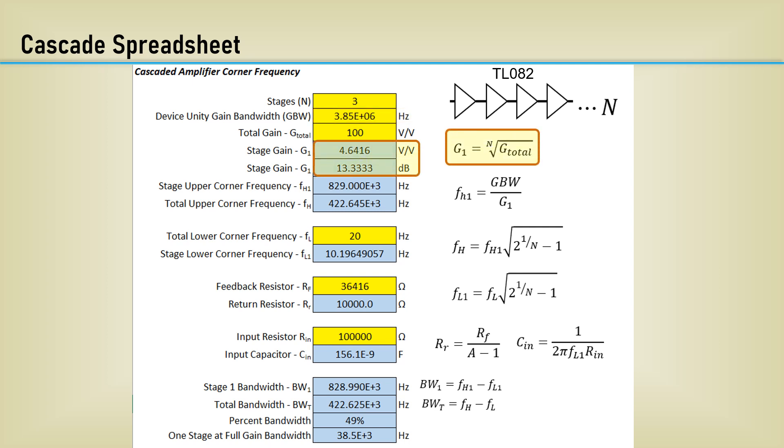This calculates the individual stage gain of 4.64 or 13 and a third dB using the nth root of the total. The individual stage upper corner frequency is the gain bandwidth divided by the individual stage gain, which comes out to 829 kHz. Using the upper corner equation we derived, we can get a total upper corner frequency of 422.64 kHz.